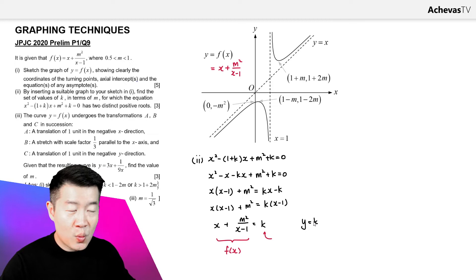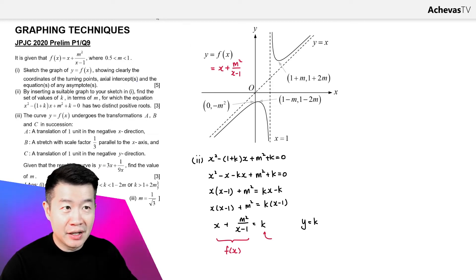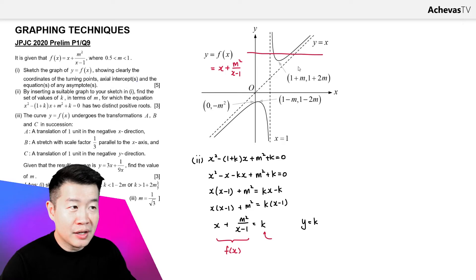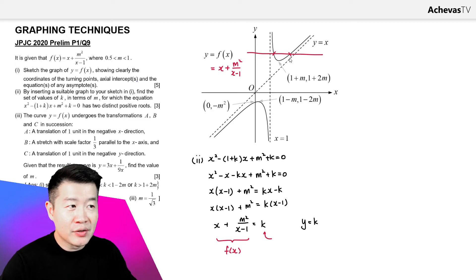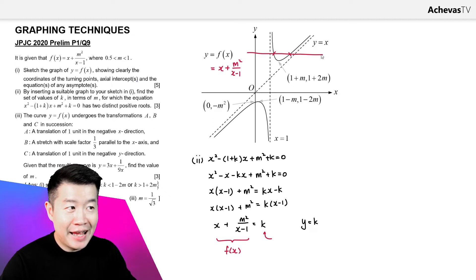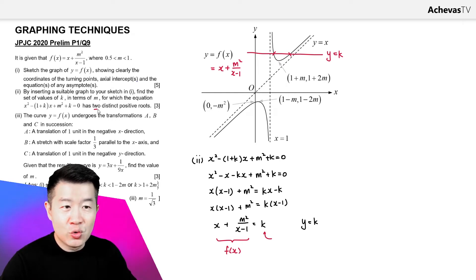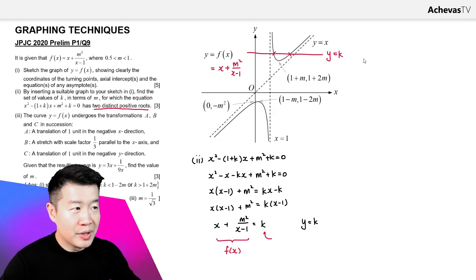Since y = k is a constant horizontal line, we look at where it cuts the graph of y = f(x). As long as the line is strictly above the minimum point at (1 + m, 1 + 2m), it will intersect the upper branch at two points with positive x-coordinates, giving two distinct positive roots. So k must be strictly greater than 1 + 2m.